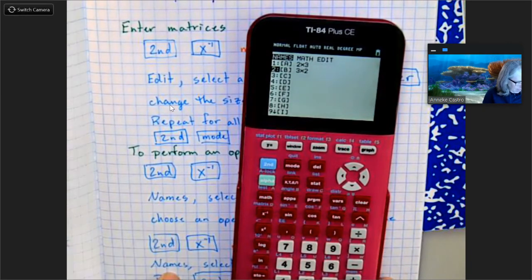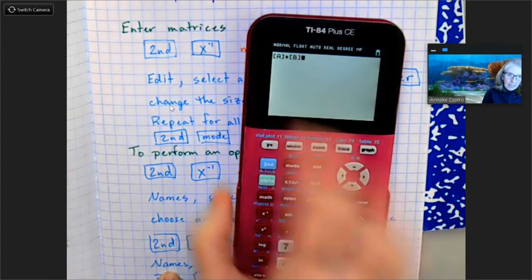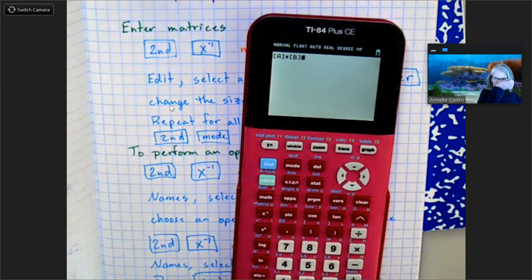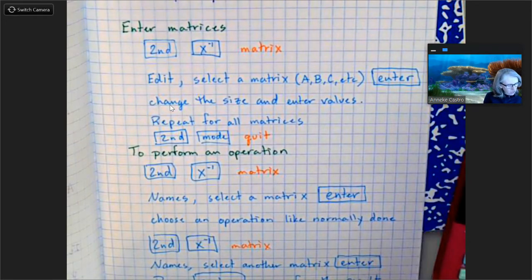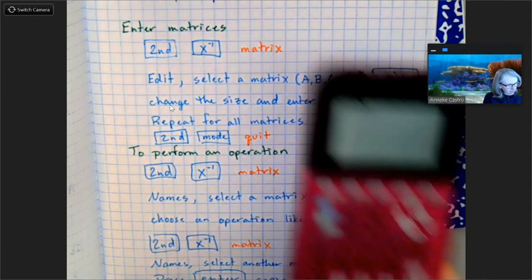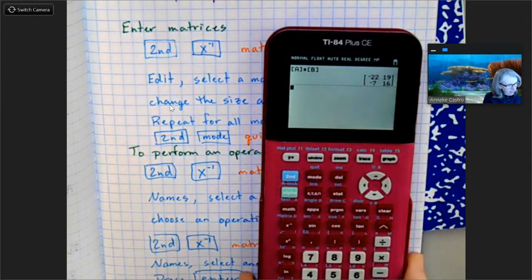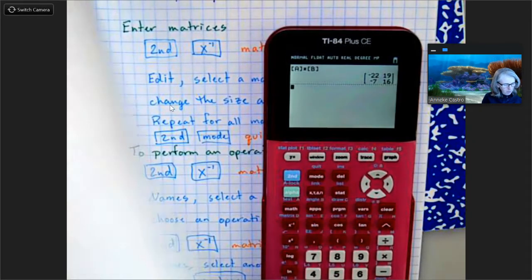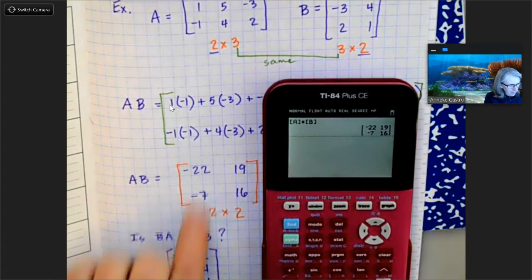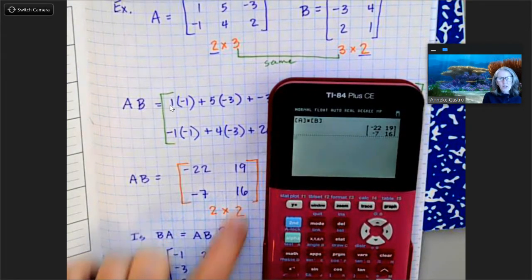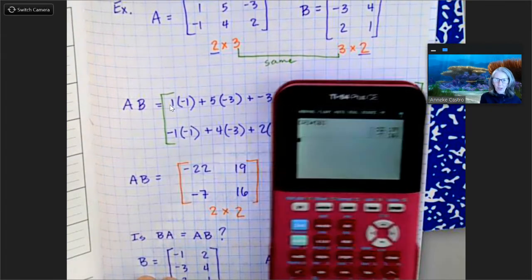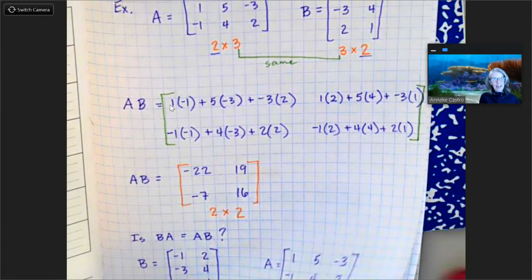So I'm going to do second x^-1 again, and this time I'm going to go down to B. Notice I'm on names, not edit, and hit enter. And there it is. See, it's going to do matrix A times matrix B, and then I just hit enter and there's my answer. So let's see, did it work? Yes, negative 22, 19, negative 7, and 16. So the calculator can do all the calculations and there you have it.